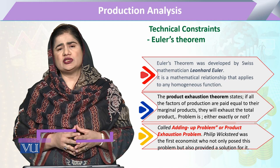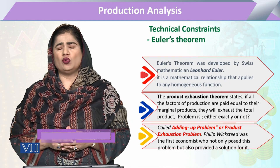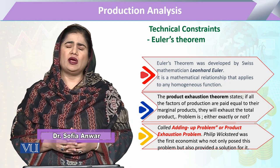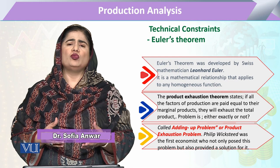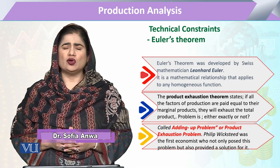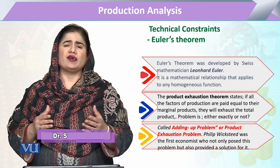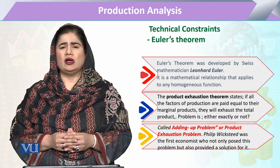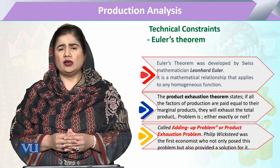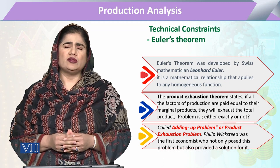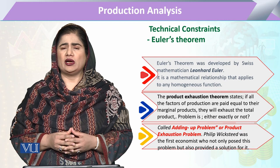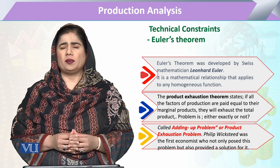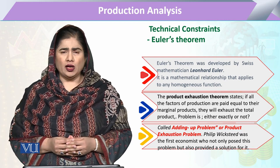That homogeneous function can be a homogeneous consumption function or any homogeneous production function. Any function or mathematical relationship having degree T — when T is equal to 1 — that will be homogeneous, and that is where we can apply this theorem.